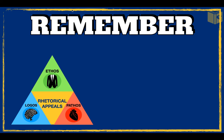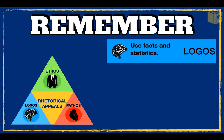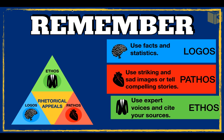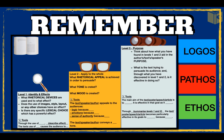The three rhetorical appeals often work together. There's logos — appealing to logic and rationality, using facts and statistics. Pathos — appealing to the emotions; use striking images or compelling stories to do so. And finally, ethos — appealing to a sense of authority; use expert voices and cite your sources. When discussing rhetorical appeals in a non-fiction analysis, you can put them in level two. Thank you.